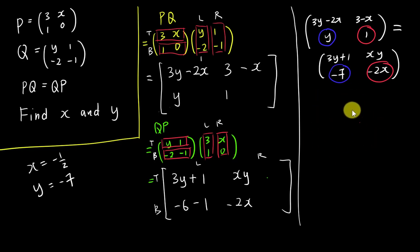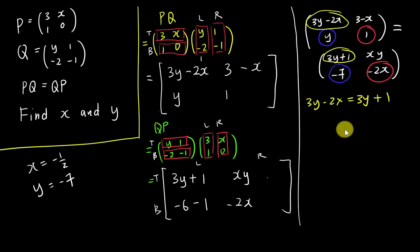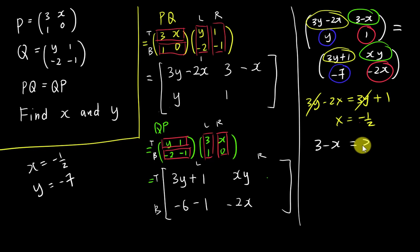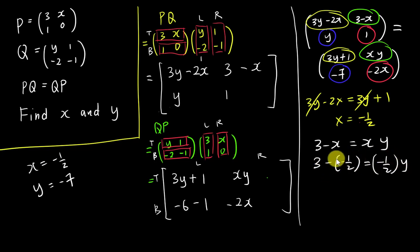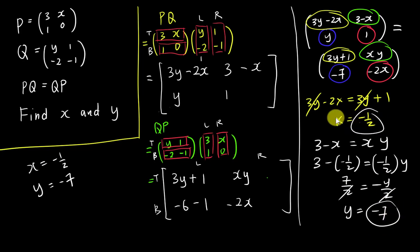Let's explore what happens if we choose a harder position. Setting top-left equal: three Y minus two X equals three Y plus one. Solving: three Y minus three Y gives zero, so X equals negative one over two — the same answer. Then for top-right: three minus X equals XY. Substituting X equals negative one over two: three plus one half gives seven over two equals negative Y over two. Simplifying, Y equals negative seven — the same answer again.